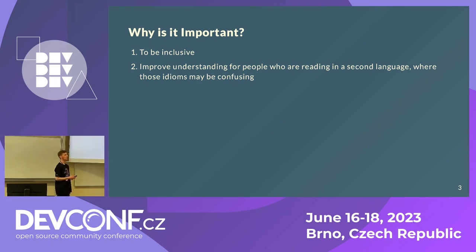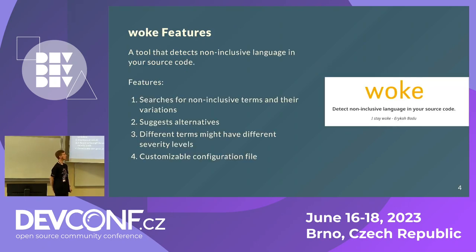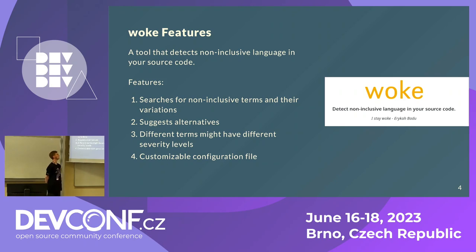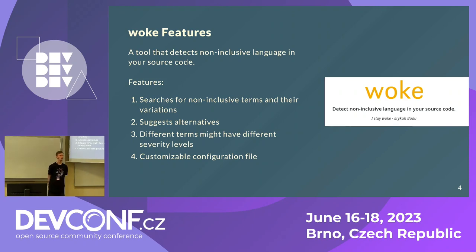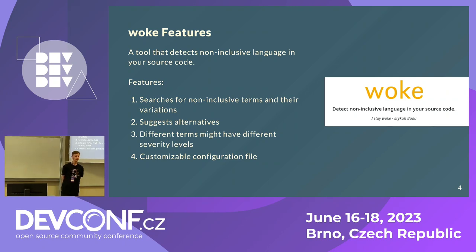A second reason is that for those who use English as their second language, it may be problematic to translate certain idioms. Now let's move to the woke tool. It finds non-inclusive terms in your code, in file names, and in the content of files themselves. It also suggests alternatives that you may use, and it has configuration options — for example to identify words you want to mark as warnings and words you want to mark as errors.